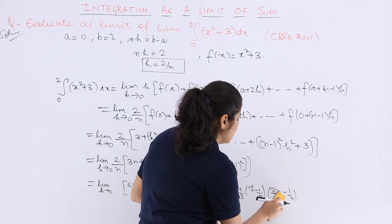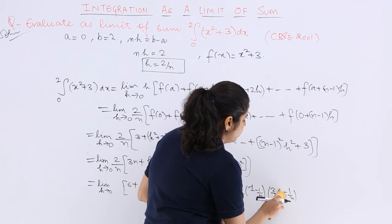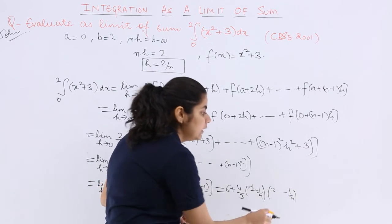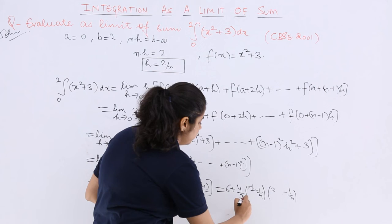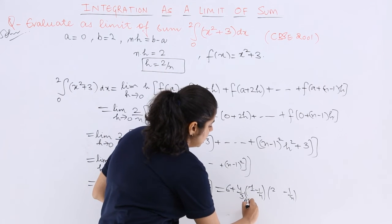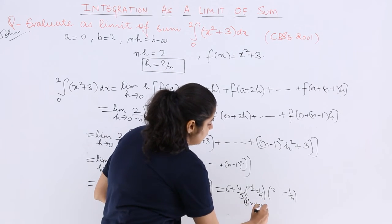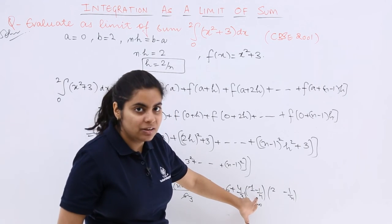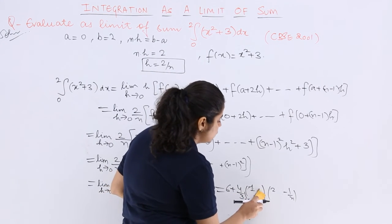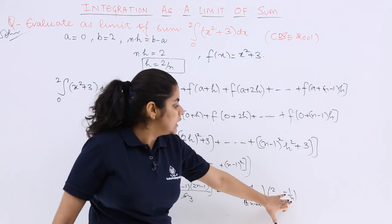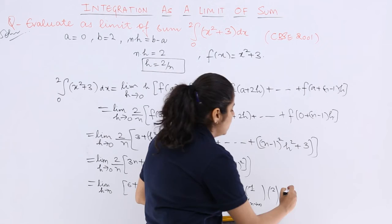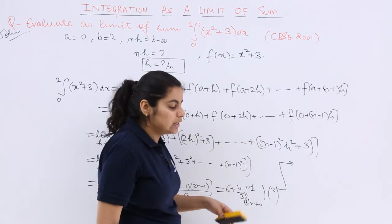It was limit which I can write here, limit N tends to infinity. If limit is N tends to infinity, 1 upon N will make it 0. So this vanishes. Here also 1 upon N is 0, so this vanishes. Finally for the solution part, what all terms are left? 6 plus 4 upon 3 multiplied by 2.